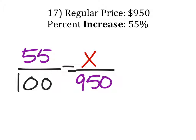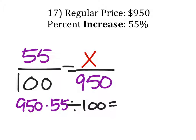So now when we solve this, we've got $950 times 55 divided by 100, and this will tell us our X value. And that's $522.50 because it's dollars.